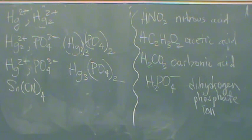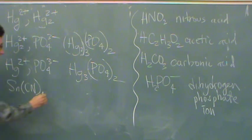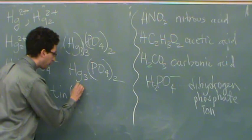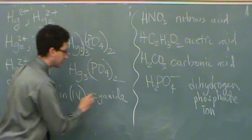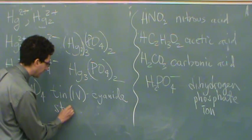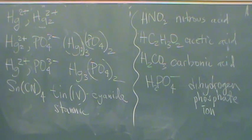You have to name this, and we see there's a transition metal, so it's automatically ionic whenever there's a metal. Tin can be named in English or Latin, so we'll do both. The charge on tin is four plus — that's the higher charge. So we can name it in English as tin(IV) cyanide. Or if you want to name it in Latin, the stem would be STANN-, and it's the higher charge, so it would be stannic cyanide.